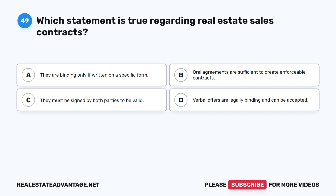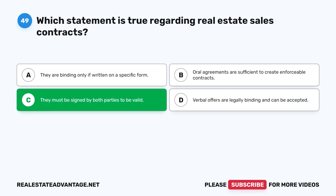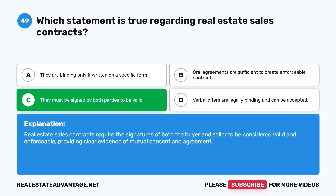Question 49: Which statement is true regarding real estate sales contracts? A. They are binding only if written on a specific form. B. Oral agreements are sufficient to create enforceable contracts. C. They must be signed by both parties to be valid. D. Verbal offers are legally binding and can be accepted. The correct answer is C: They must be signed by both parties to be valid. Real estate sales contracts require the signatures of both the buyer and seller to be considered valid and enforceable, providing clear evidence of mutual consent and agreement.